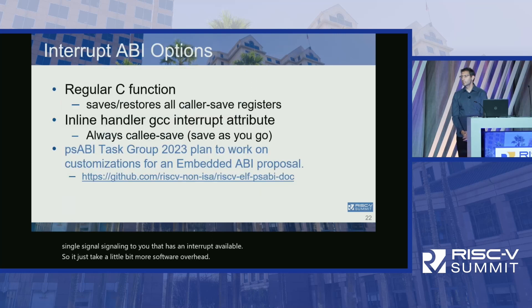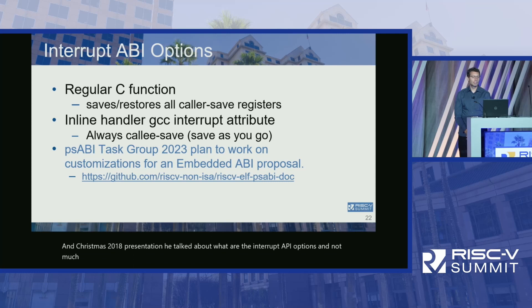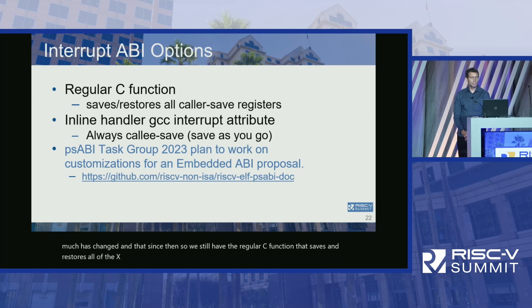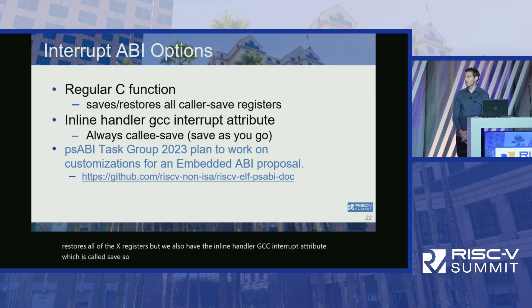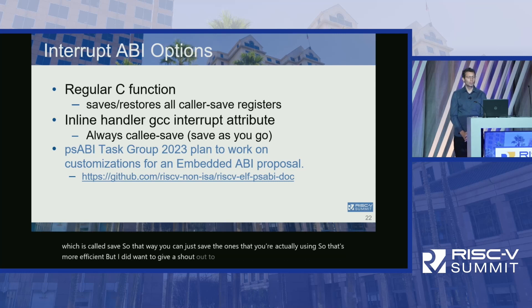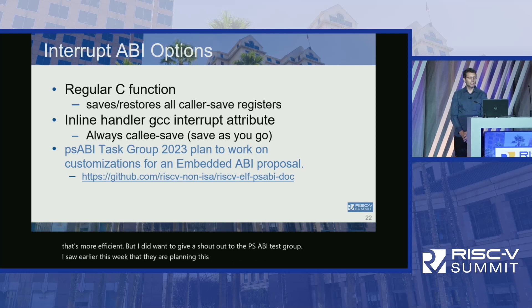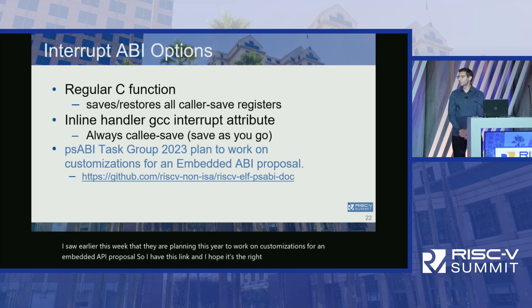In Krste's 2018 presentation he discussed interrupt ABI options, and not much has changed since then. We still have the regular C function that saves and restores all X registers, and the inline handler GCC interrupt attribute — Cali-save — which saves only the registers actually used, so it's more efficient. I want to give a shout-out to the PSABI task group, because earlier this week they announced plans to work on customizations for an embedded ABI proposal. Please reach out to that group if you're interested.